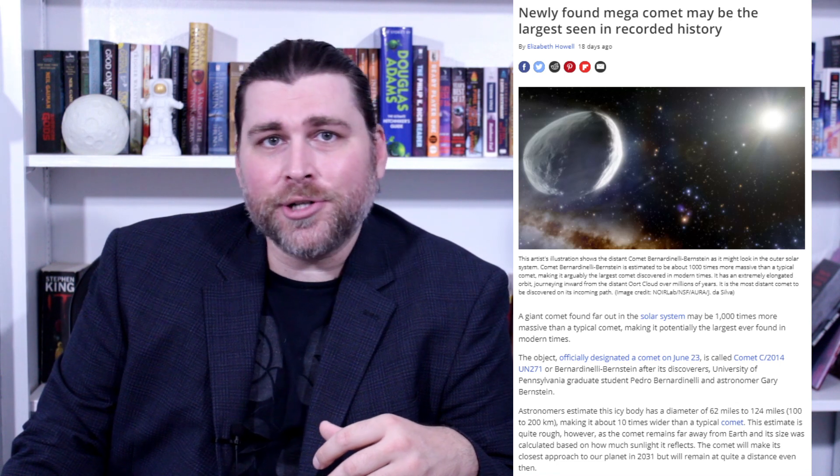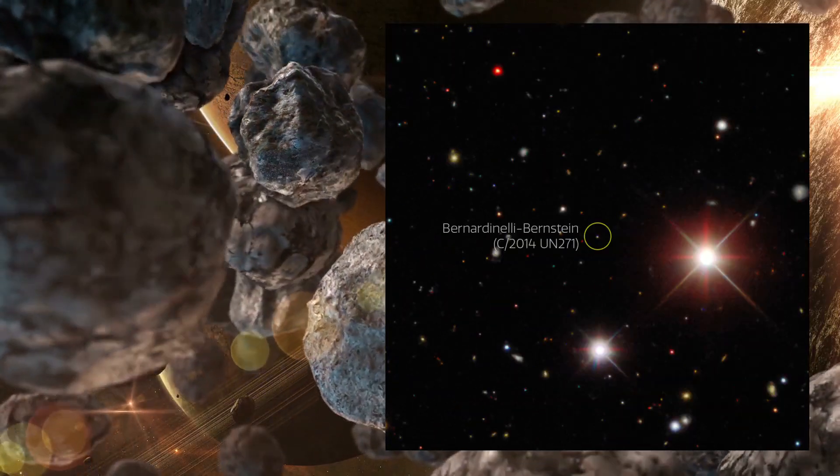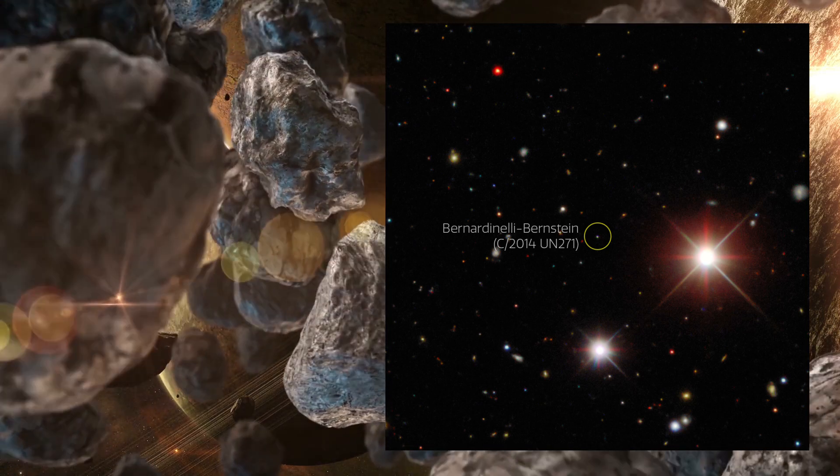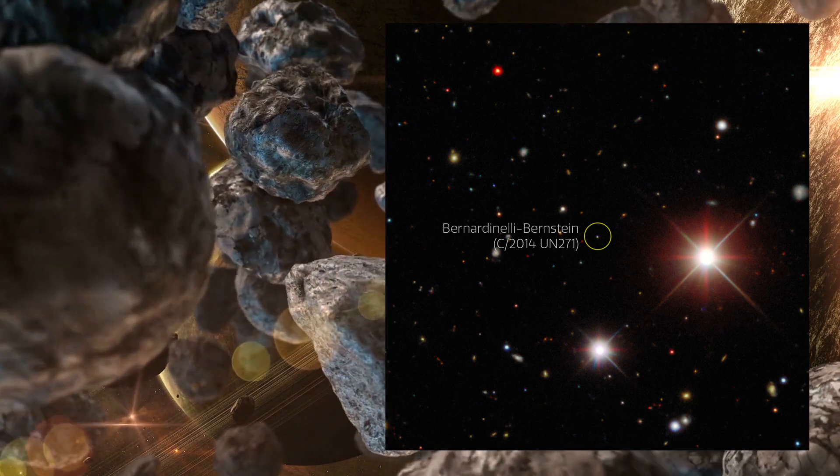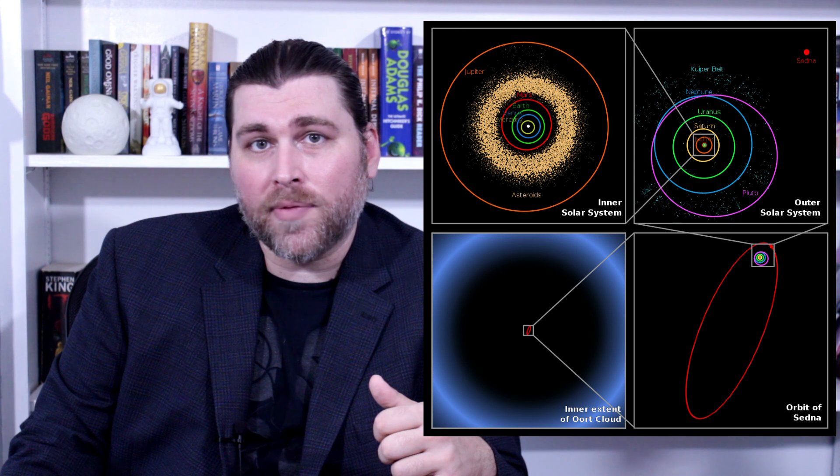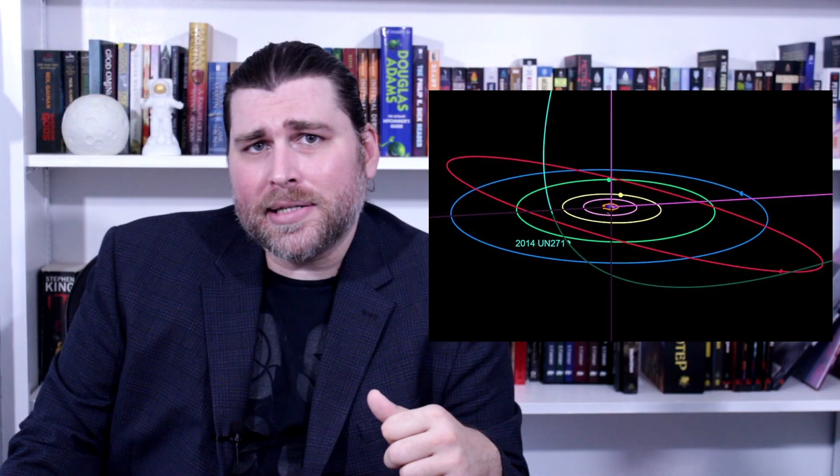Comet Bernardinelli-Bernstein, or 2014-UN271 officially—you decide which is easier to say—was discovered thanks to data captured by the Dark Energy Camera in Chile, appearing in about 30 images of the approximate 80,000 that were originally taken during the DES's six-year survey of the night sky. The object is thought to come from the Oort Cloud, in a region that is estimated to be 10,000 to 20,000 times farther from the Sun than the Earth is. Its orbit is estimated to take around 3 million to 5.5 million years just to complete one loop around the Sun.